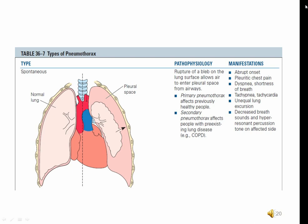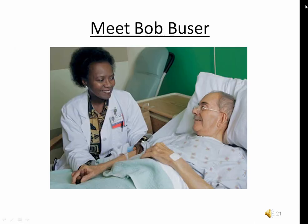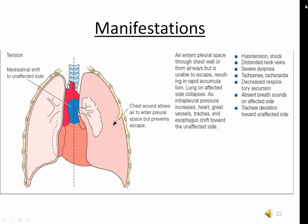Trauma, such as a gunshot or stab wound, will rip through the layers around the lungs causing entry of air, fluid, or blood. In a case study, 64-year-old Bob Buser, admitted with ascites from long-standing cirrhosis, develops a pneumothorax after surgeons insert a central venous catheter. The signs and symptoms: Bob will complain that it hurts to breathe and that he's not getting enough air. When listening to his lungs, one side will sound as if no air is moving through, and eventually he will be breathing faster with a faster heart rate.